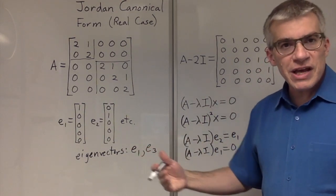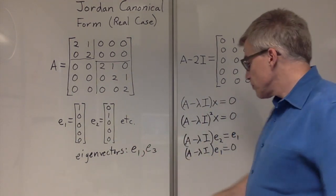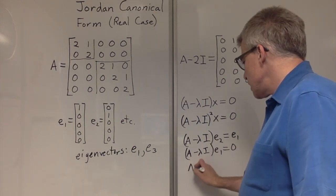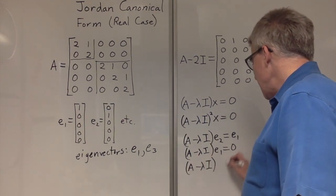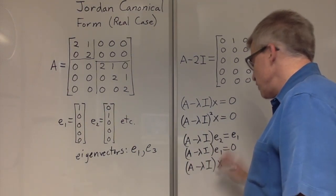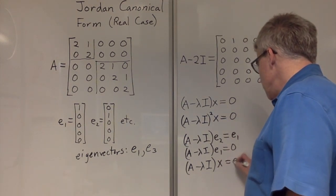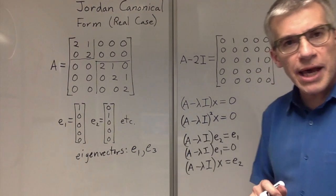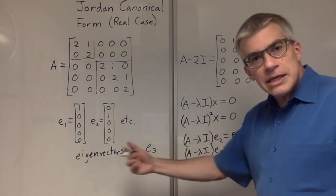Suppose we want A minus lambda I acting on some mystery vector X to give E2. Can we do that? If so, we'll have extended the chain.